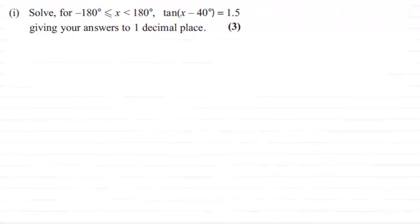Hi there. Now for this question we're asked to solve for -180° ≤ x < 180°, the equation tan(x - 40°) = 1.5, giving your answers to 1 decimal place for three marks. So if you'd like to have a go at this, just give you a moment to pause the video.